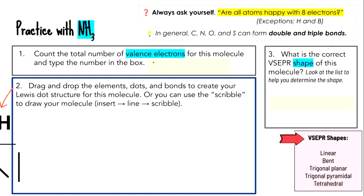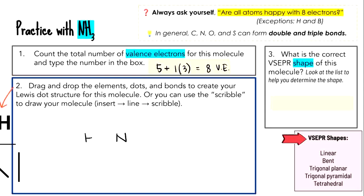Now let's look at NH3. Nitrogen has five valence electrons; hydrogen has one each. So that's a total of eight valence electrons to work with. The single element — nitrogen — goes in the middle, and the three hydrogens go around it: left, right, bottom. As long as you have three hydrogens, one nitrogen, and the correct number of valence electrons, that's all that matters.